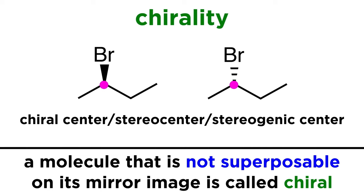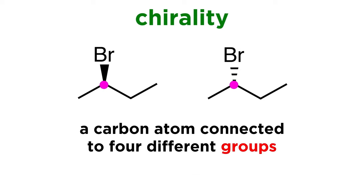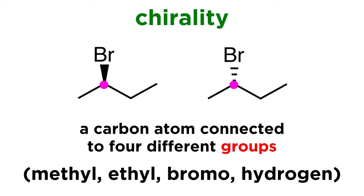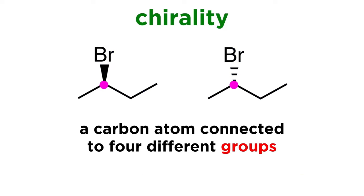There are a lot of synonyms for this term. We could say stereocenter or stereogenic center and we'd be talking about the same thing. We would generally be talking about a carbon atom that is connected to four different groups — in this case methyl, ethyl, bromo, and hydrogen. This is the reason the mirror image is different.